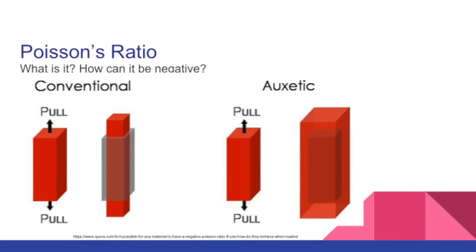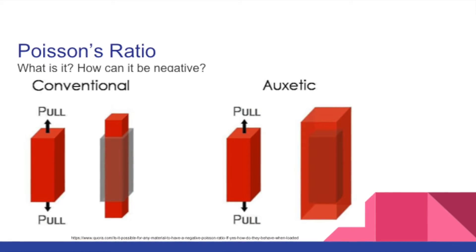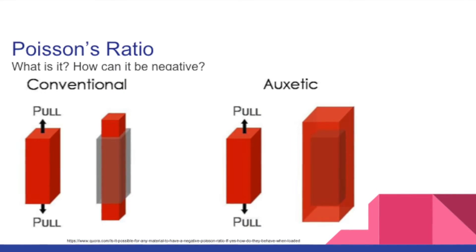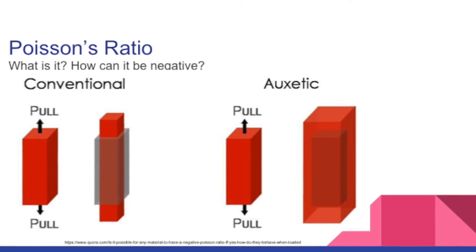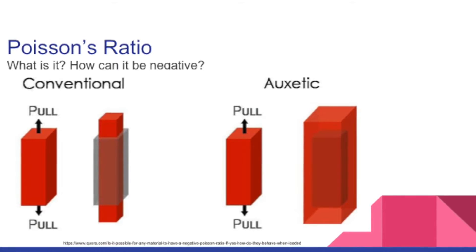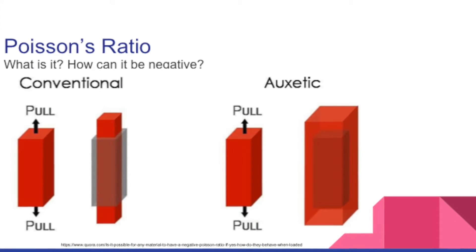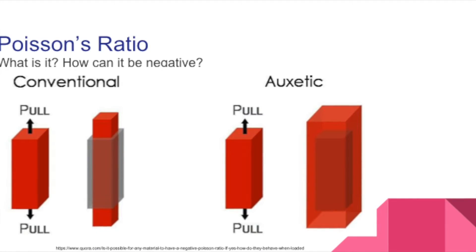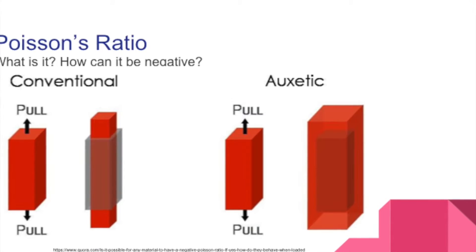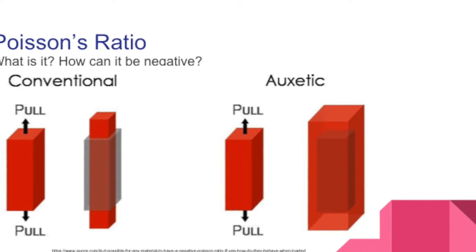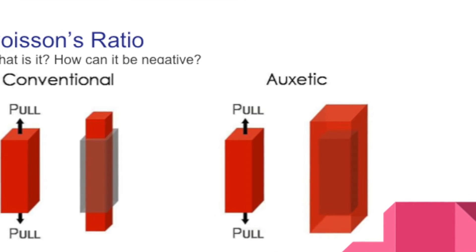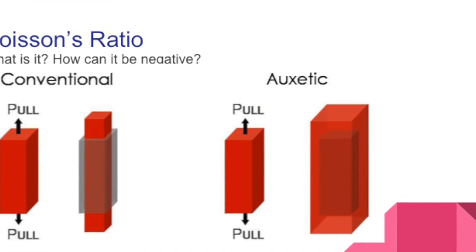Let's give everyone a quick refresher. Poisson's Ratio is the ratio of the proportional decrease in a lateral measurement to the proportional increase in length in a sample of material that is elastically stretched. As you can see on the left picture, when a specimen is pulled, it increases in length but decreases in width. On the right is an example of a material with negative Poisson's Ratio — when pulled axially, it increases in length as well as in width.